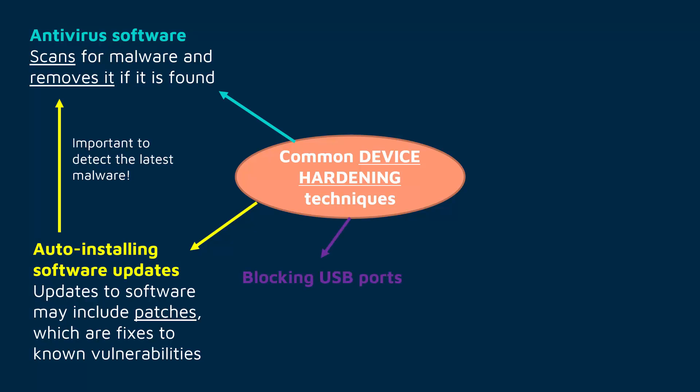A simpler technique is just blocking USB ports. This is because it's a threat that people can walk in, plug in an external hard drive, download loads of data and take it out — or the other way around, bring malware into your network or systems via a USB port. You can block it either physically or through software, but you can stop people using USB ports.